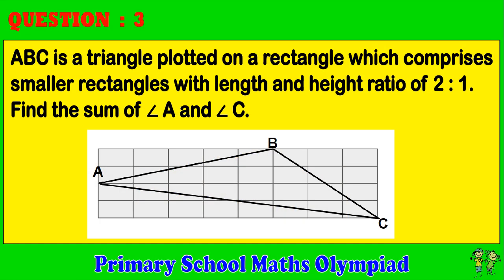Question 3: ABC is a triangle plotted on a rectangle which comprises smaller rectangles with length and height ratio of 2 to 1. Find the sum of angle A and angle C.